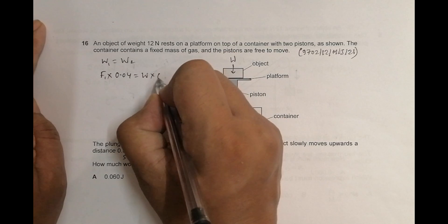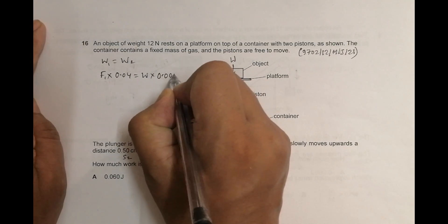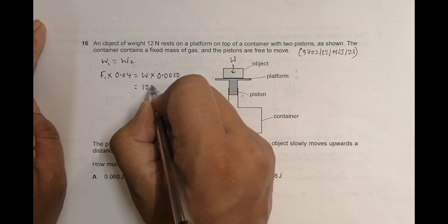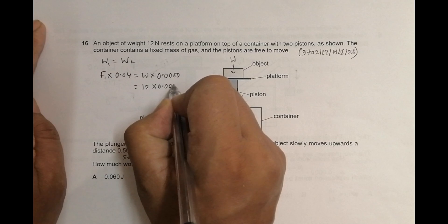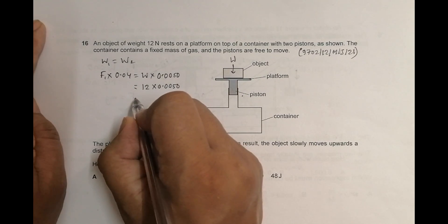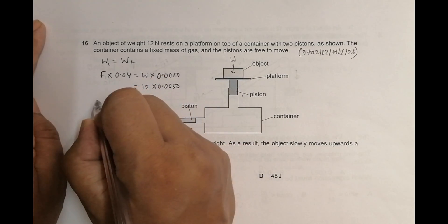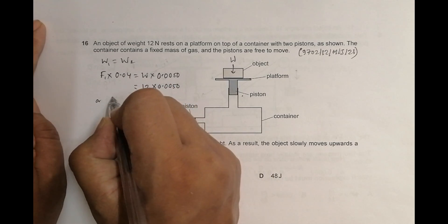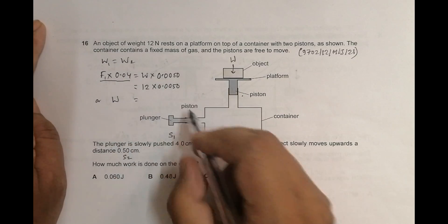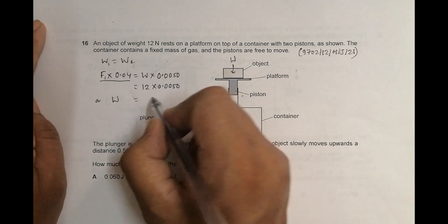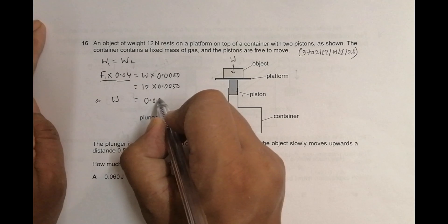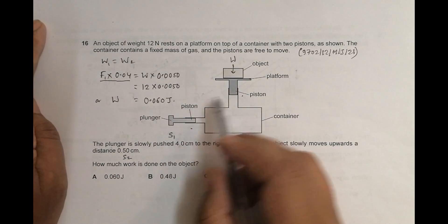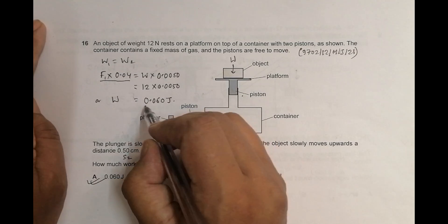F2 here is W into the distance it moves, which is 0.50 cm, so 0.0050 metres. This equals W, which is 12, into 0.0050. Since we are asked for the work done on the object, we don't need to solve further — the work done equals 12 × 0.0050, giving us 0.060 joules. The answer is option A.